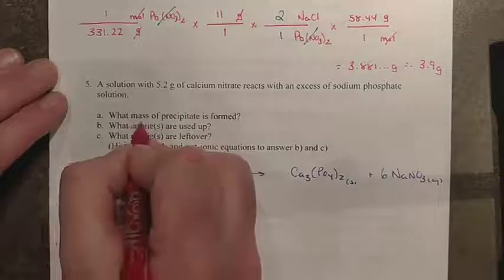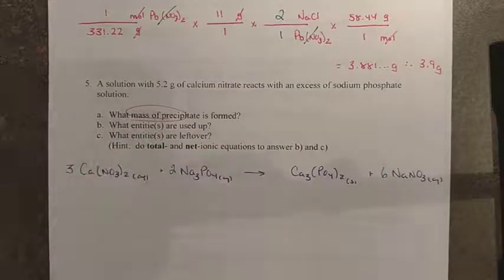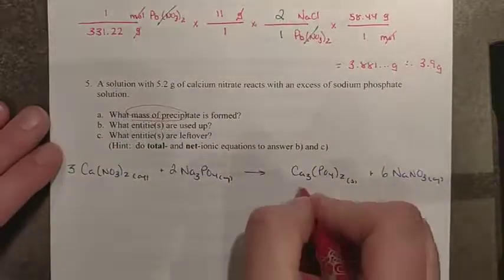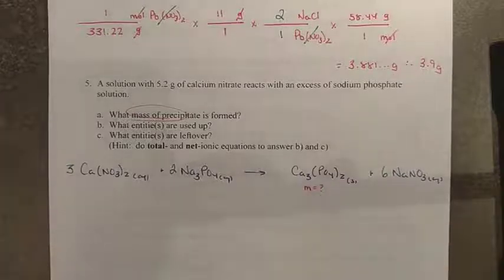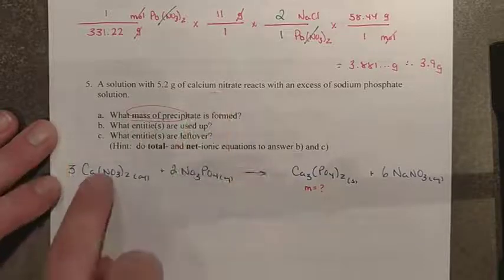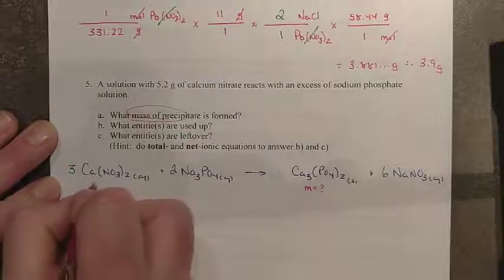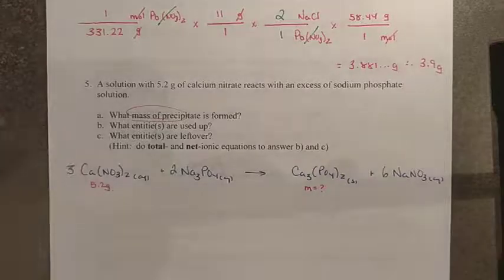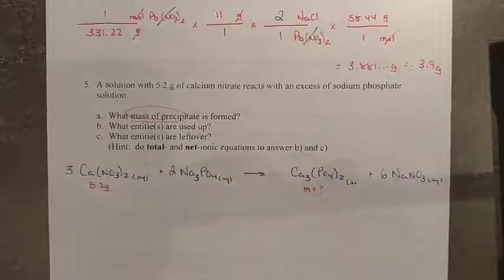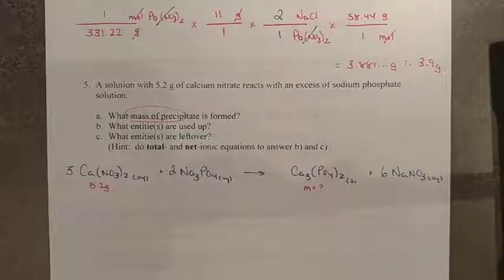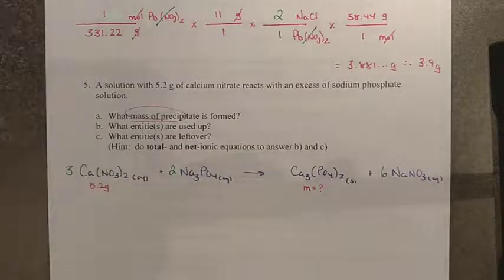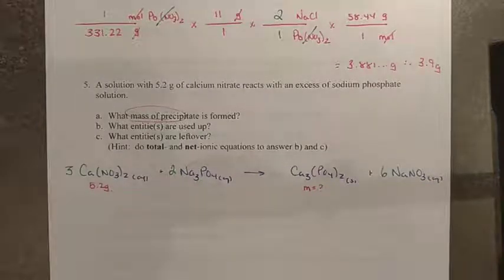So for this one, we are looking for the mass of precipitate. Which one is the precipitate? It is the solid in solution. So you're looking for the mass of this guy here, and we've been given 5.2 grams of calcium nitrate right here. So now we're just looking at the relationship between calcium nitrate and calcium phosphate. So a good place to start here would again be with the molar mass of calcium nitrate. That put moles in the numerator, which we want.